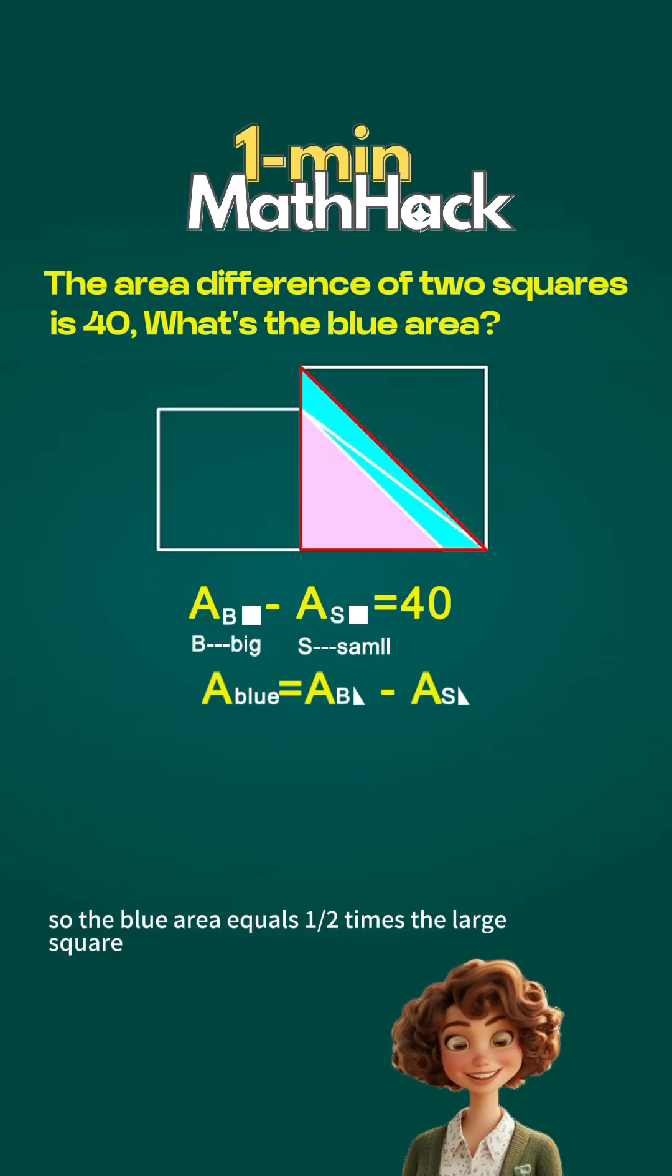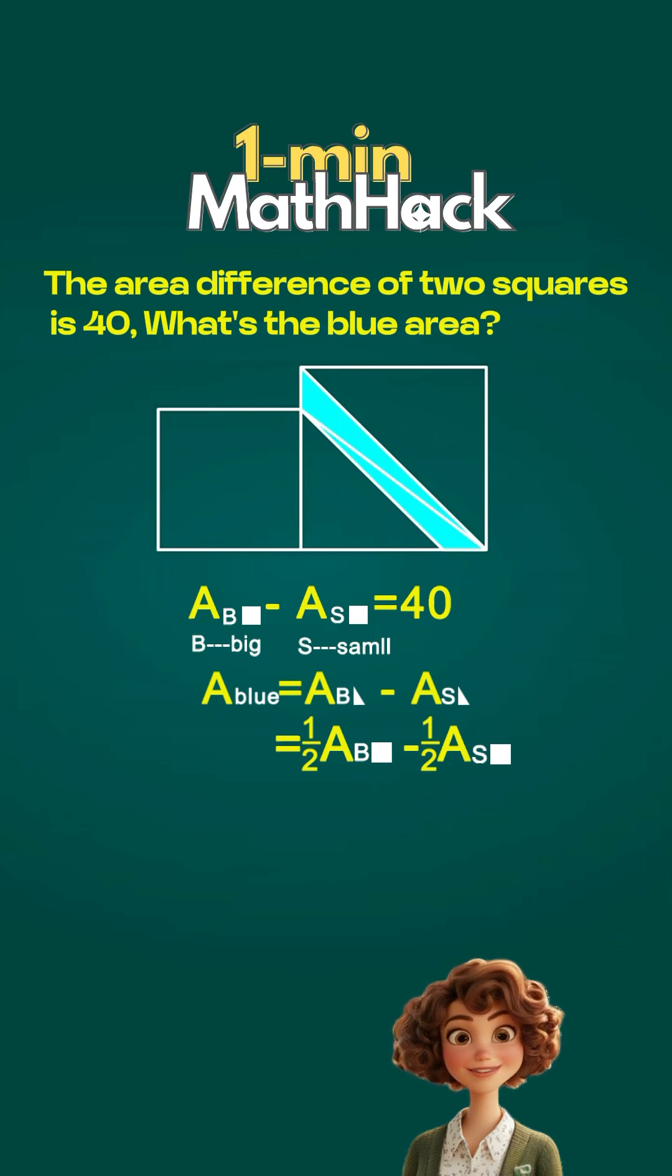So the blue area equals one half times the large square minus the small square. We know the difference in square areas is 40. So the blue region is one half times 40 equals 20.